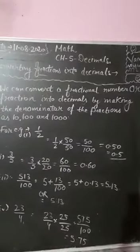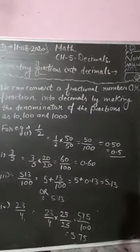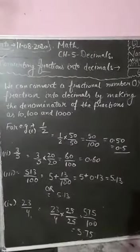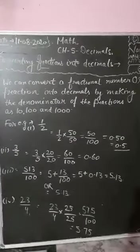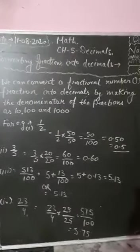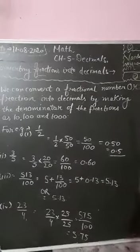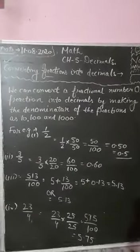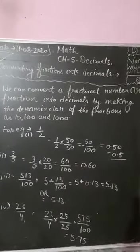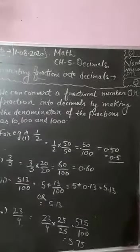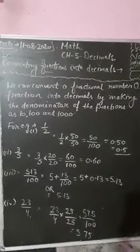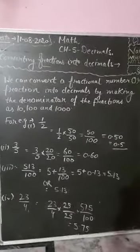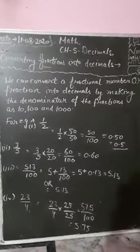We can convert a fractional number into decimals by making the denominator of the fraction as 10, 100, or 1000. So what you need to do, if you want to convert a fractional number into a decimal, you have to make the denominator of the fraction as 10, 100, or 1000. For example, I have written 1 by 2.